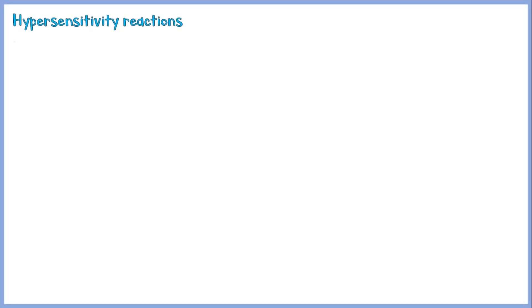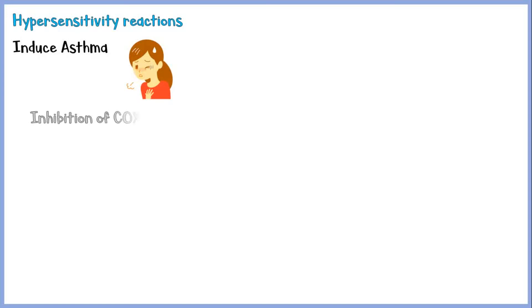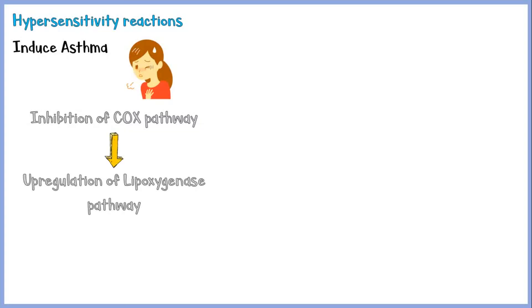Another well-known adverse effect of aspirin is hypersensitivity reactions. One common example is aspirin-induced asthma. The mechanism by which aspirin induces asthma is still not very clear. However, some theories suggest that inhibition of the COX pathway by aspirin will reduce prostaglandin synthesis and at the same time upregulate the lipoxygenase pathway, which results in increased leukotriene production. Leukotrienes are the major mediators responsible for the pathogenesis of asthma.